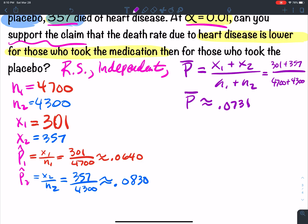So P bar is this. Q bar is 1 minus 0.0731, which is 0.9269.